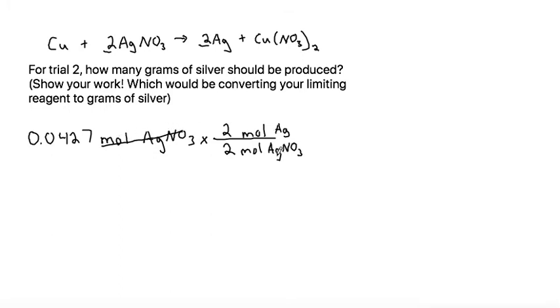The moles of silver nitrate cancels out to give us moles of silver. Now once we've converted to a unit of moles of silver, the next step would be to convert to grams of silver.